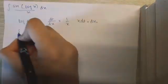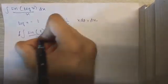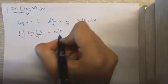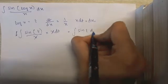So in the integral I can write the integral of sin t upon x into x dt. X and x gets cancelled and I'm left with the integral of sin t dt.